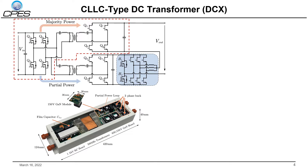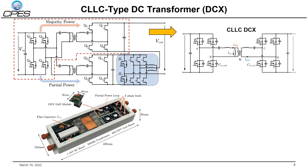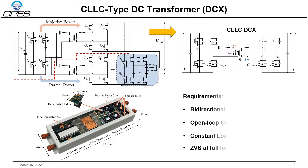To achieve high efficiency, the key point is to design a high-efficiency CLLC DCX because the majority of power will go through it. The requirements of the DCX are shown on the right bottom, such as bidirectional power flow, open-loop control, constant and load-independent voltage gain, and full range soft switching.